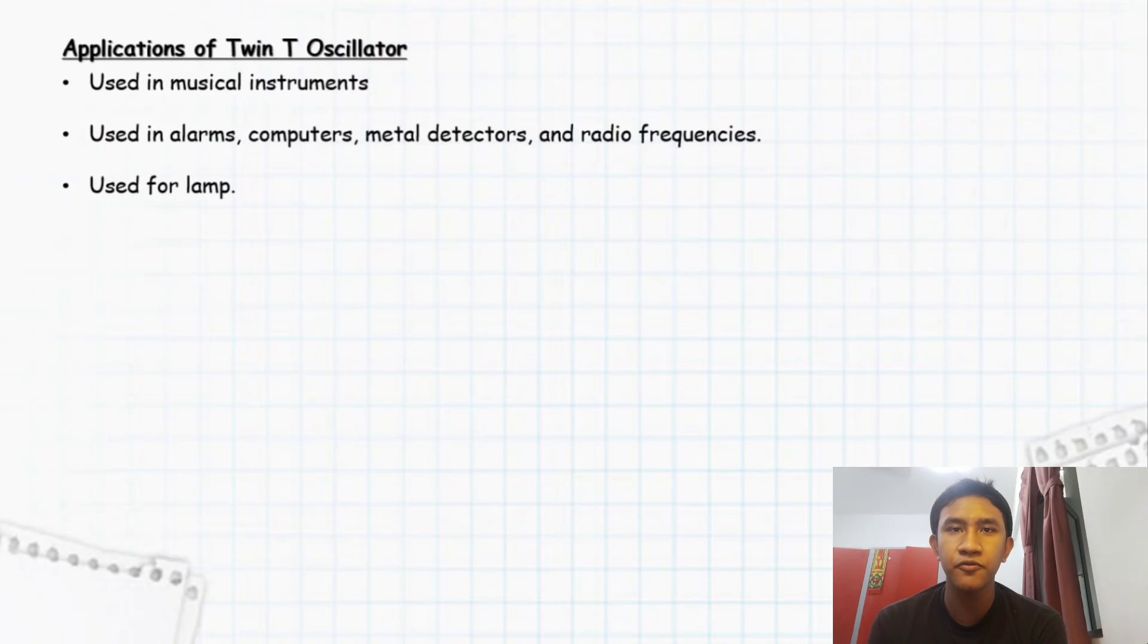Now I will talk about applications of twin-T oscillator. This oscillator has a wide range of uses including musical instruments and instrumentation. The twin-T oscillator is also used in alarms, computers, metal detectors, and radio frequencies such as television, mobile phones, and radio. This twin-T oscillator has the thermal stability of an electric generator and light will refuse to attenuate to the minimal attenuation through an op-amp circuit that varies.